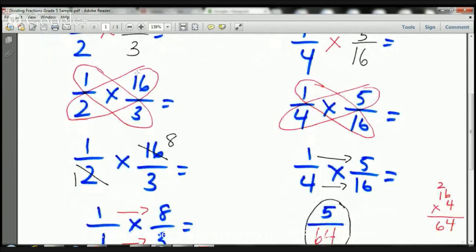Can we cross-cancel out anything? So, I look at the two and the sixteen, and the one and the three. Can two go into sixteen? Yes, it can. How many times can it go into it? Eight times. Can one go into three? Yes, it can, three times. We're not going to do anything there.